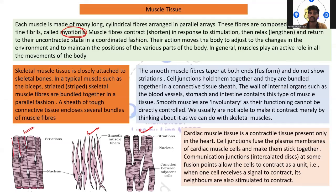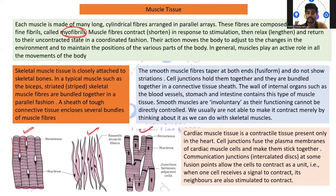In skeletal muscle tissues, as you can see in the figure, they are closely attached to the skeleton bone. It is a typical muscle such as biceps, triceps, and other skeletal muscles, where cells are attached in a parallel way. The sheet of tough connective tissue encloses several bundles of muscle fibers. In smooth muscles, there is a somewhat tape-like structure, pointed at both ends.